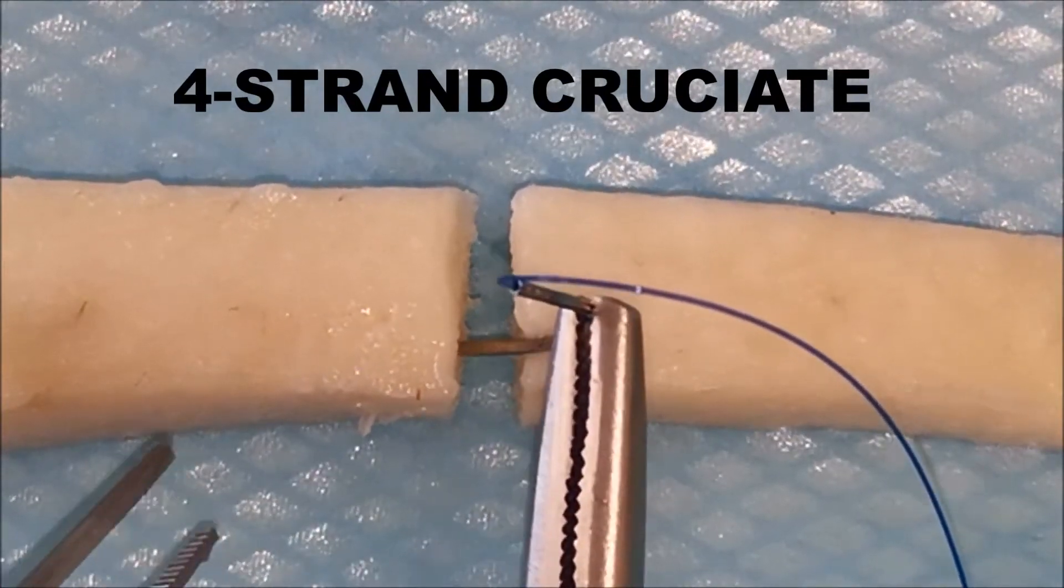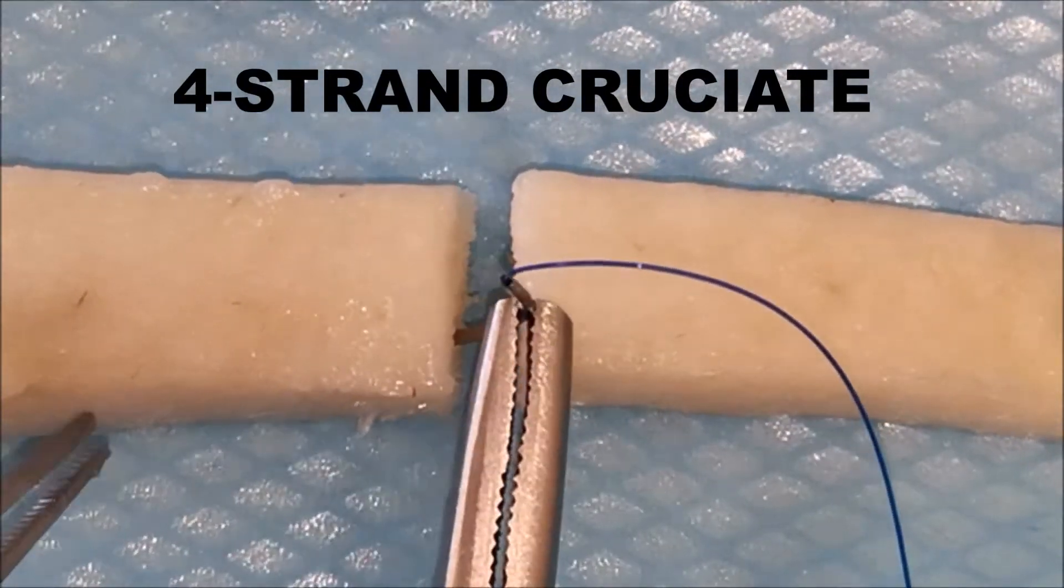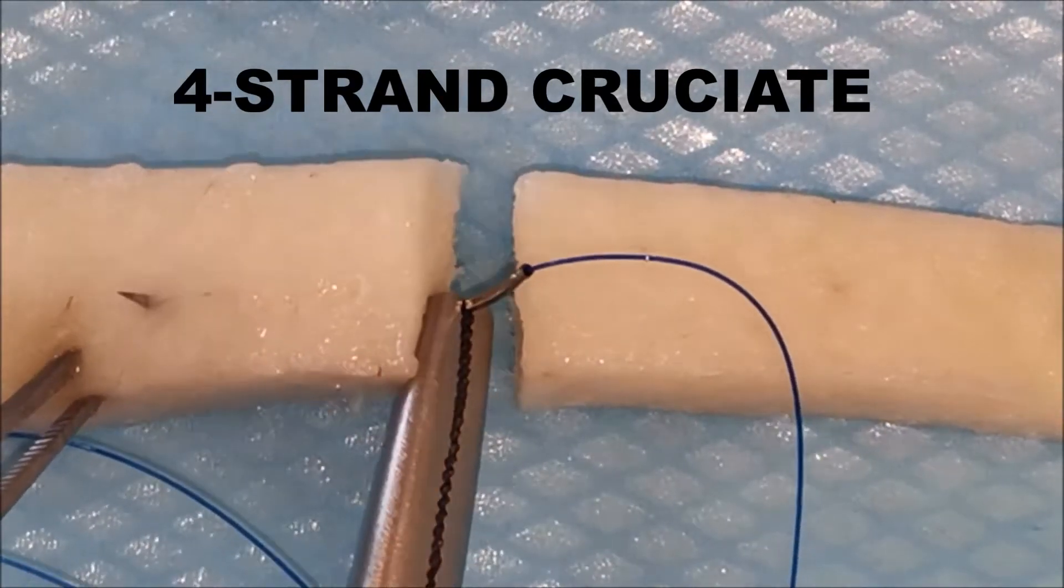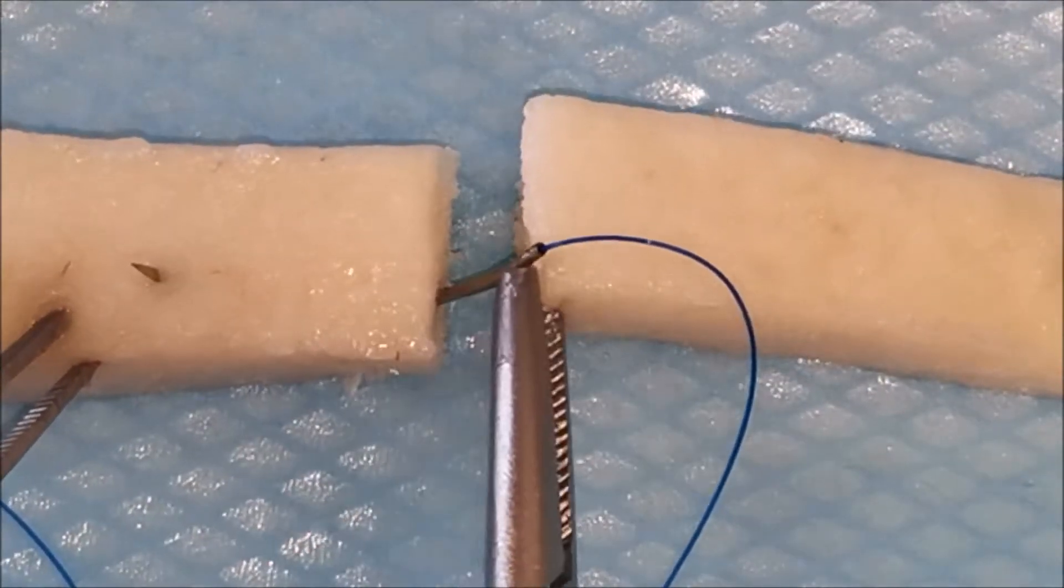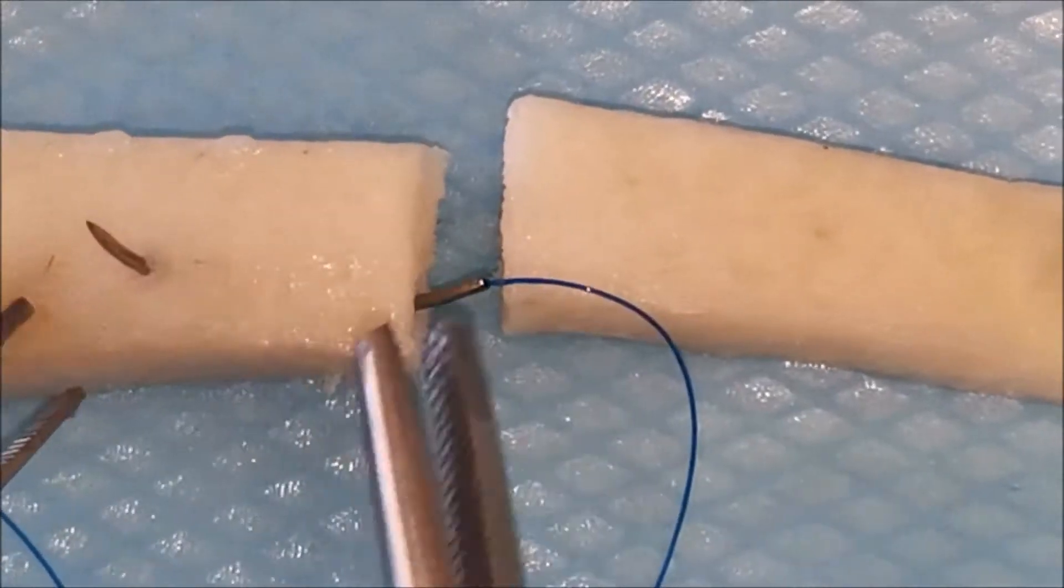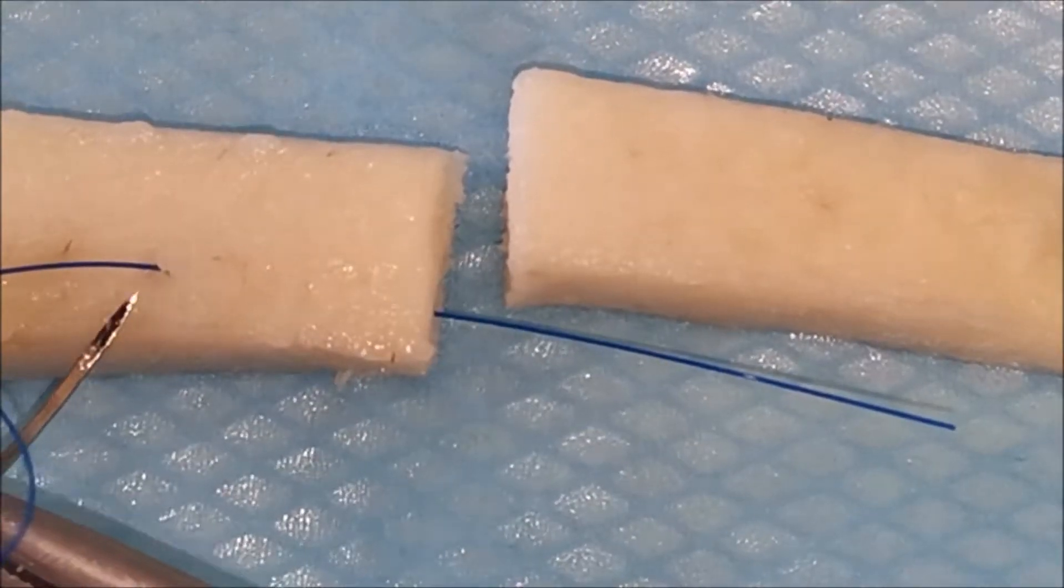We'll do the four strand cruciate once again on a tendon. The first bite is taken and you want to ensure you take at least a centimeter if possible.